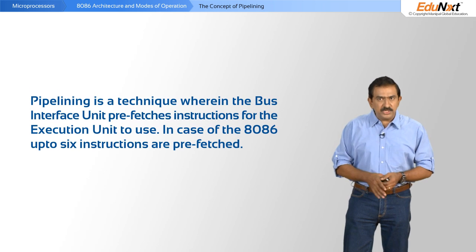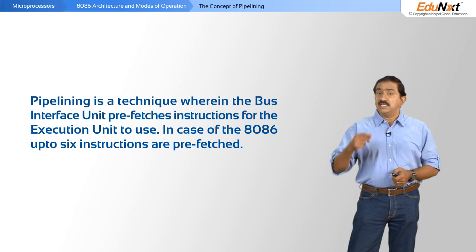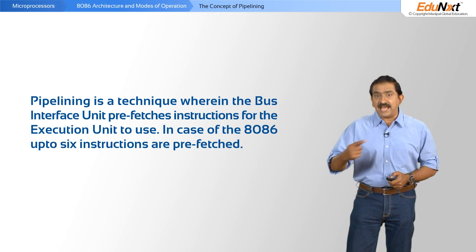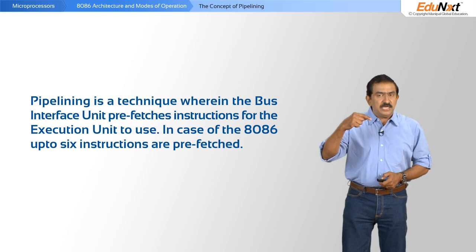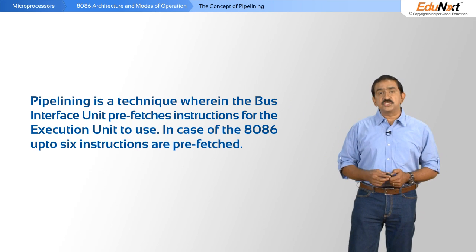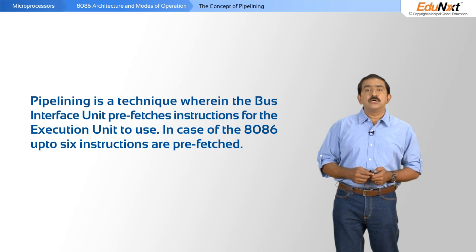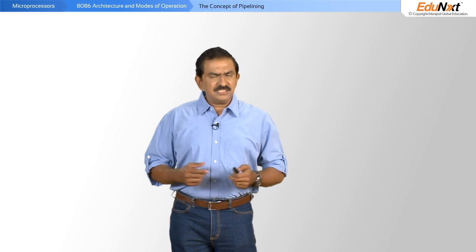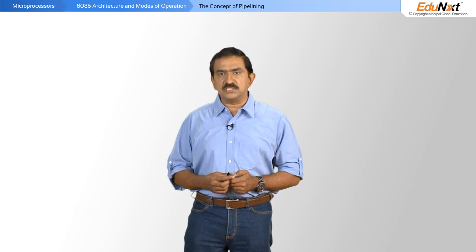With pipelining, you fill a pipe full of instructions that the execution unit can access on the fly. As and when an instruction is executed, the pipe gets refilled from external memory automatically. This allows the execution unit to perform at optimum speed. Only when you need to execute a jump instruction does the pipe have to be completely refreshed; otherwise it is a sequential flow of instructions in the main program.